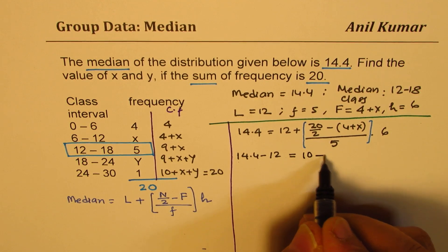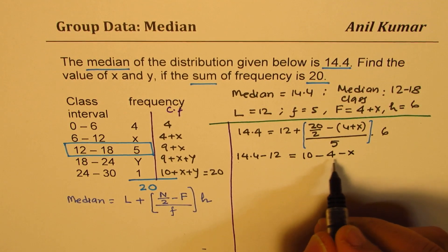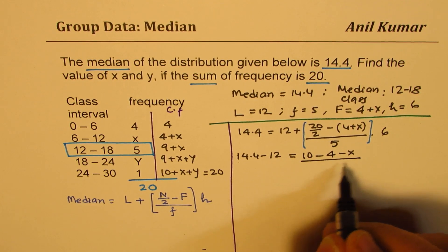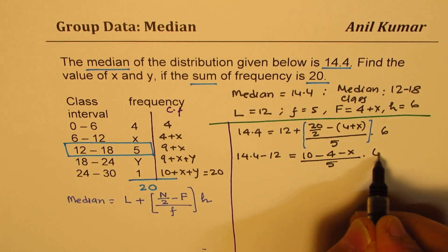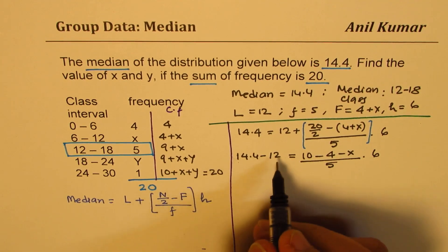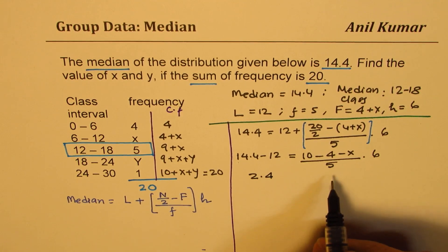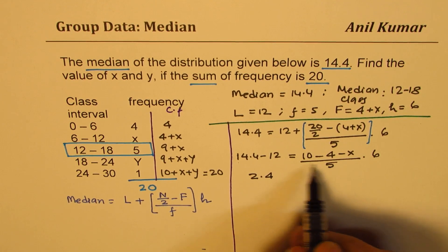Then we have 10, open the bracket, minus 4 minus x over 5 times 6. So this is 2.4 and we can cross multiply.